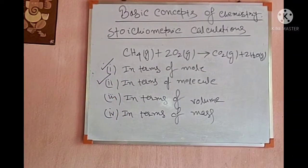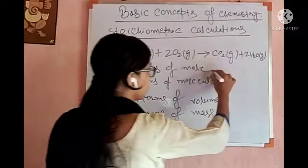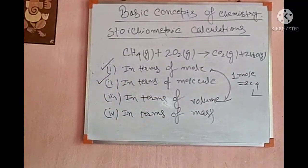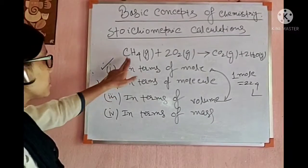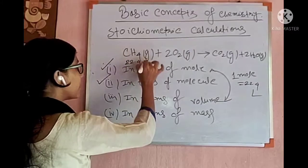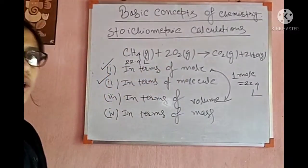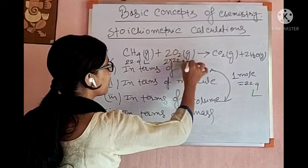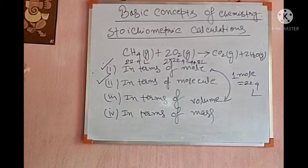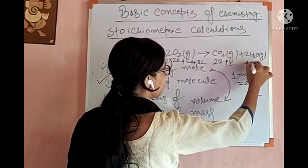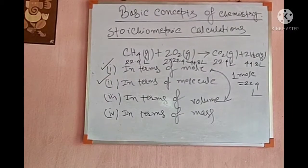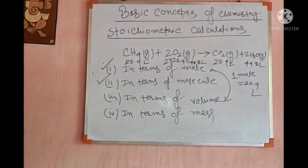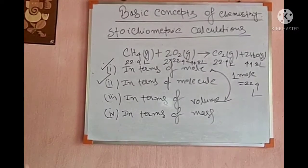For the third type, stoichiometry is in terms of volume. There is a relationship between mole and volume: 1 mole represents 22.4 liters. So 1 mole of methane equals 22.4 liters. For 2 moles of oxygen: 2 × 22.4 = 44.8 liters. So 22.4 liters of methane reacts with 44.8 liters of oxygen giving 22.4 liters of carbon dioxide and 44.8 liters of water.